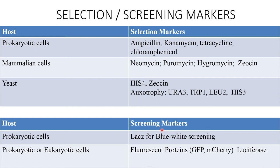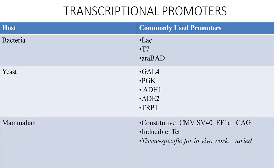For screening markers, for prokaryotic hosts lacZ is used for blue-white screening. For eukaryotic cells, fluorescent proteins like green fluorescent protein (GFP), mCherry, or the luciferase enzyme are used.